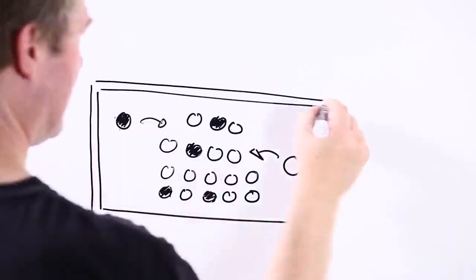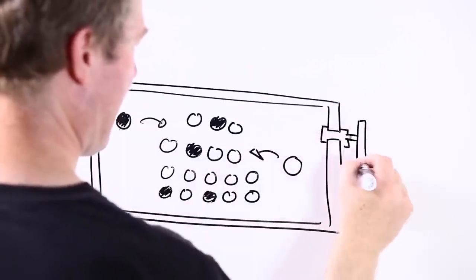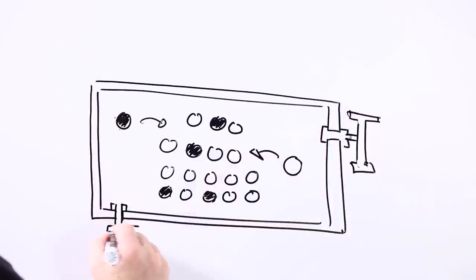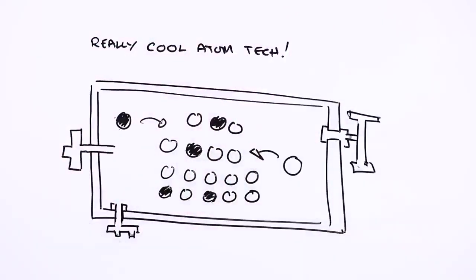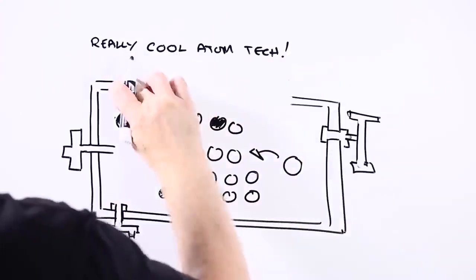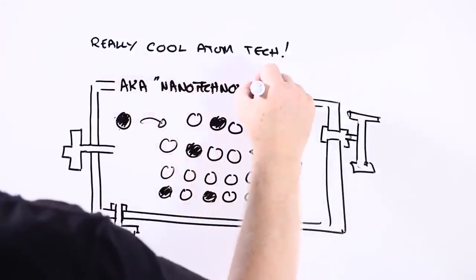But over the past few years, scientists and engineers have become increasingly good at designing and engineering materials down at the level of atoms or small groups of atoms. And because this new technology involves doing stuff at such a minute scale, it's called nanotechnology.